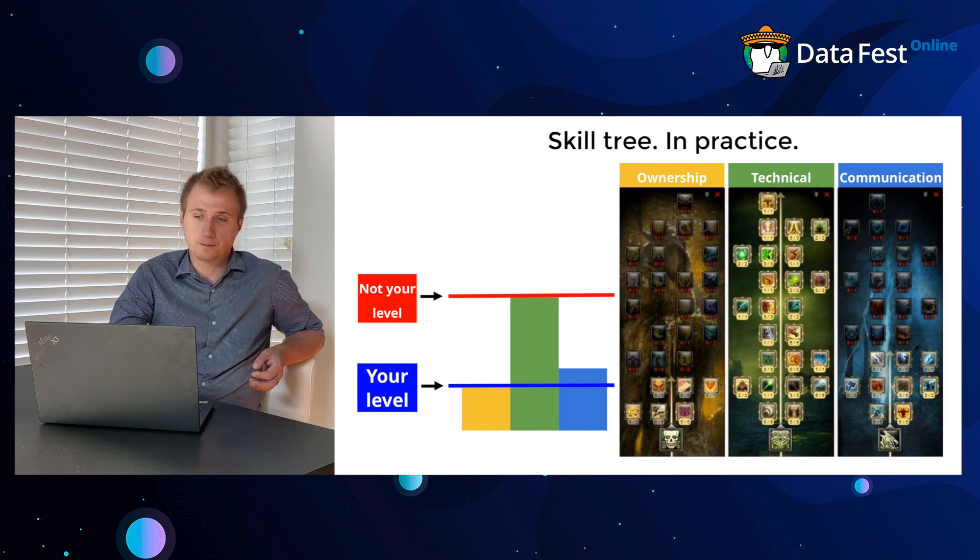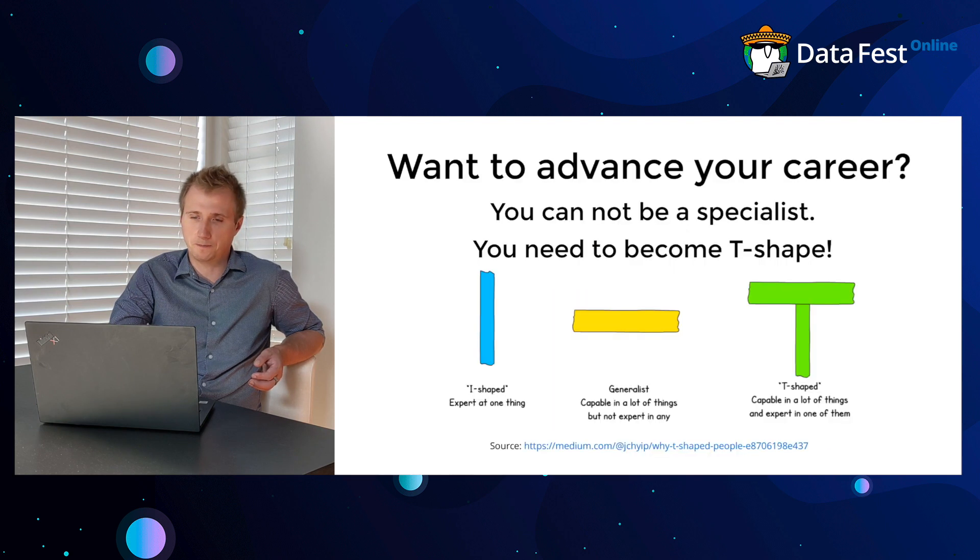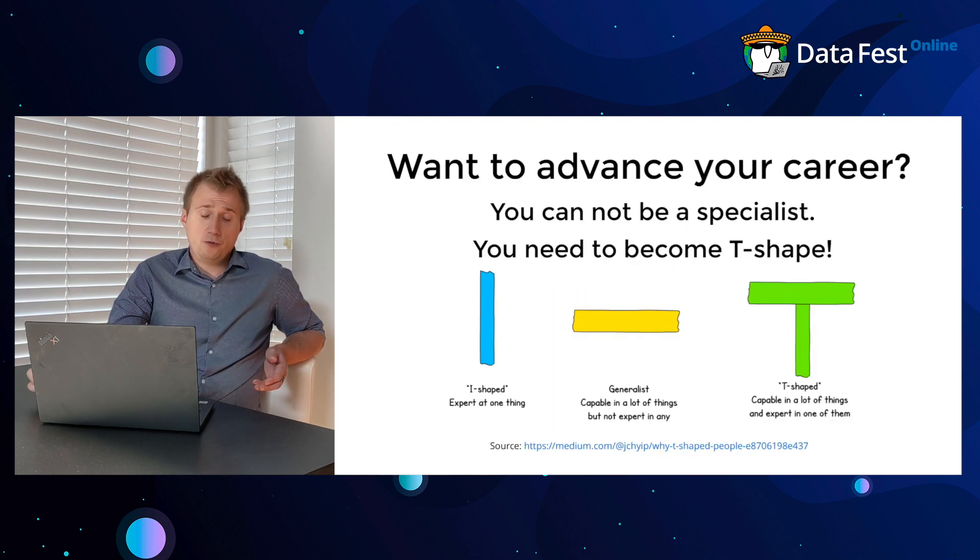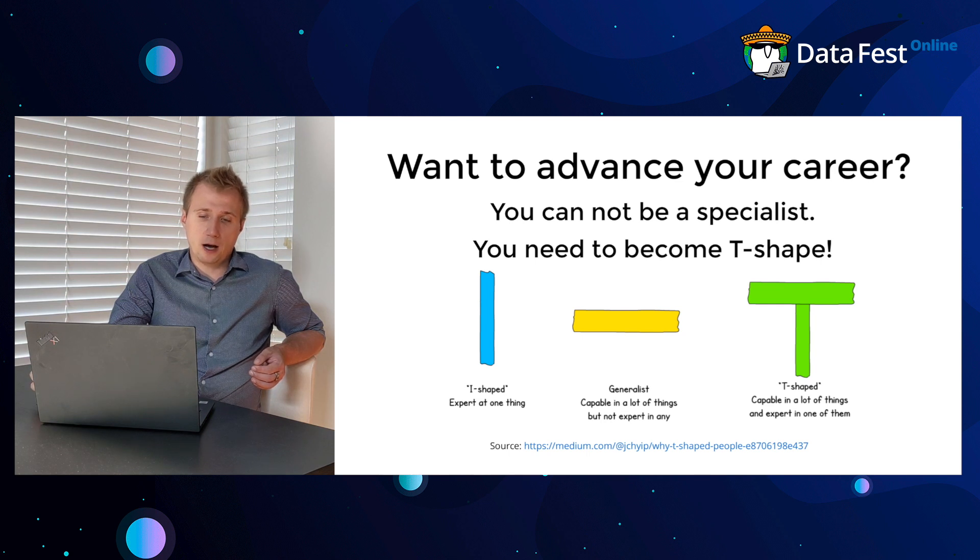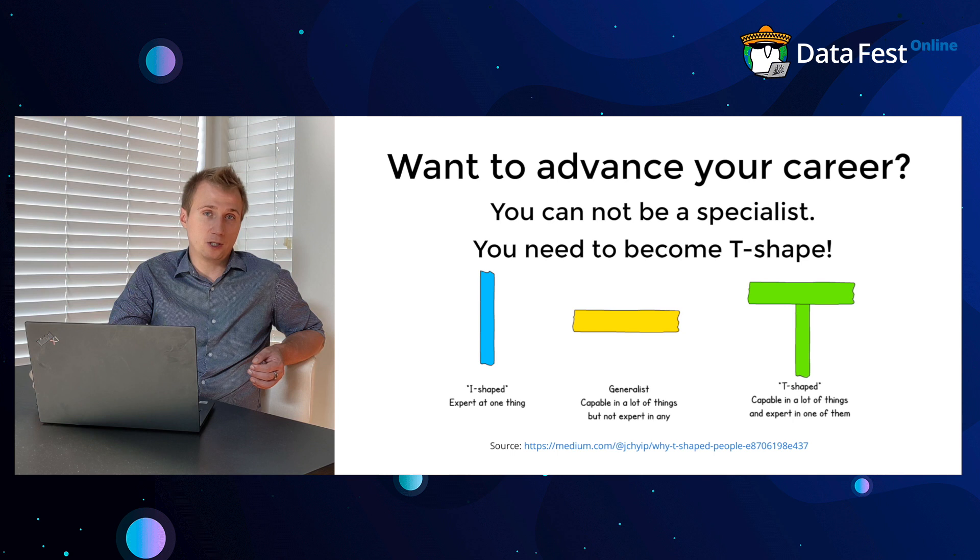So all three are important. If you want to advance your career, you cannot stay I-shaped, you cannot stay a specialist. You need to add breadth to your knowledge. By the time people get to senior, they're already T-shaped. To advance further, you need to become even more T-shaped, or what is called M-shaped or some other shape where you have different specializations but still a wide range of complementary skills.